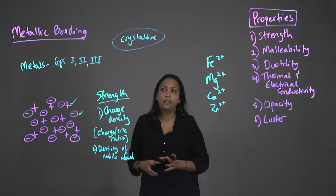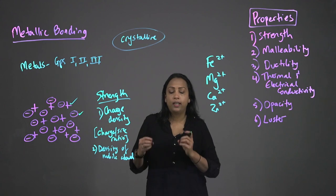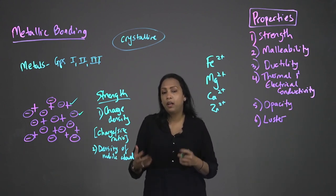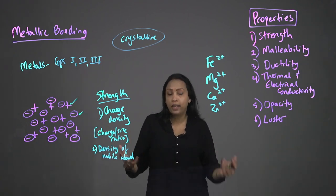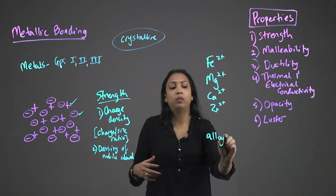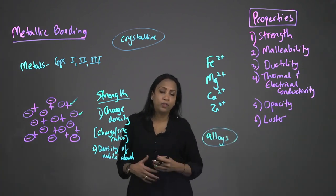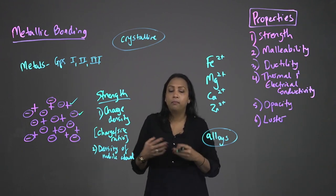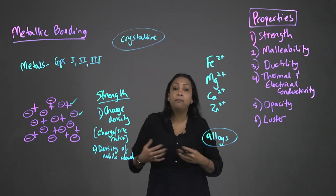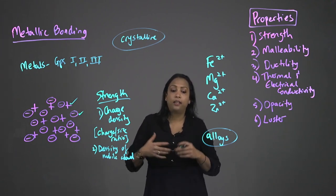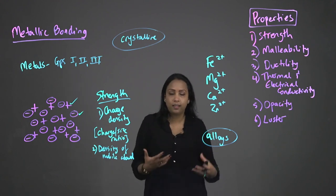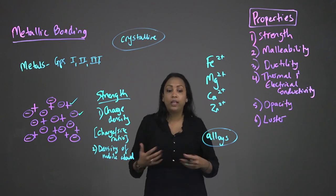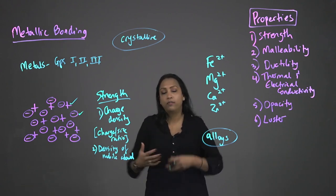Even though metallic bonding on its own is not seen within living systems, we are still mentioning it because many metals, as well as combinations of different metals — which we know as alloys — are very important in the field of biomaterials. These special metal alloys are able to be used to create implants for use in the body, and they are called biomaterials because they do not elicit an immune response, allowing healing and regaining of function of joints and other tissues.